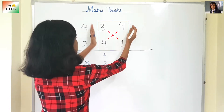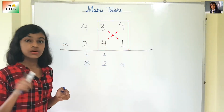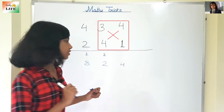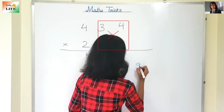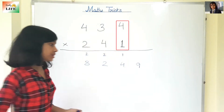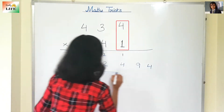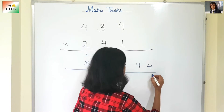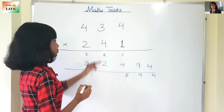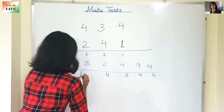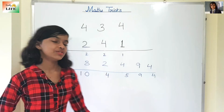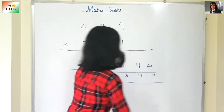Now: 3×1 is 3, and 4×4 is 16. So 16 plus 3 is 19 — write 9 and carry 1. Then the last one: 4×1 is 4, nothing to carry. Now let's add everything together: 4 plus 1 carry is 5, 2 plus 2 carry is 4, 8 plus 2 carry is 10. So the answer is 104,594.